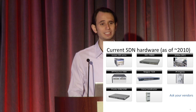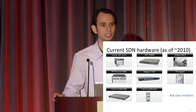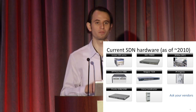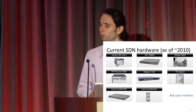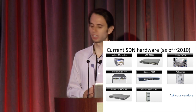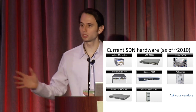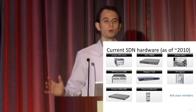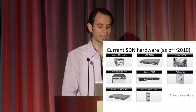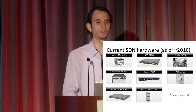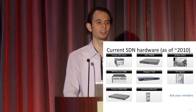HP has their ProCurve chassis switches - that's another form factor to get OpenFlow. There are a bunch of other 1U boxes like those from Netgear and NEC, as well as a Juniper MX prototype. Since 2010 there are more, but it's impossible to keep track of every development, so ask your vendor what they offer. The more you ask, the more likely they are to actually deliver.